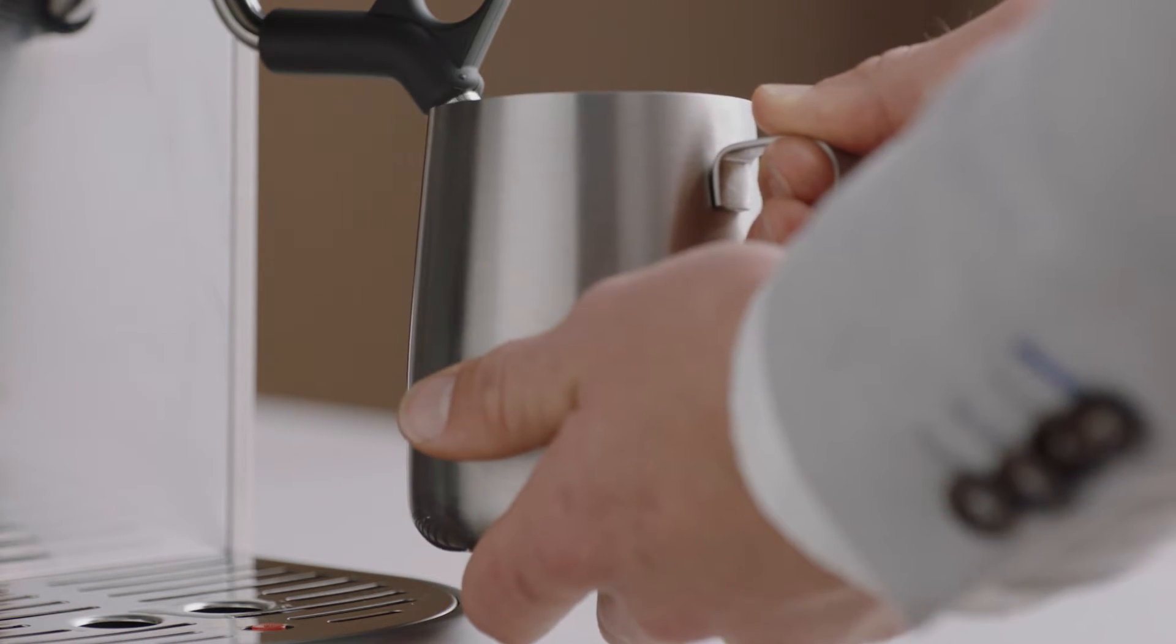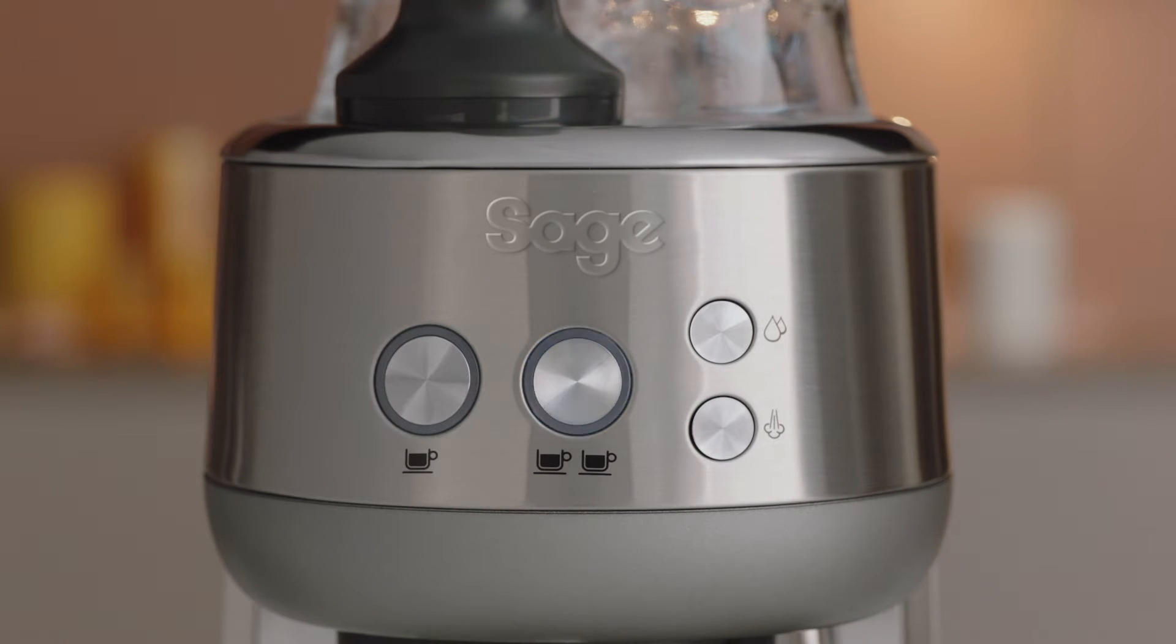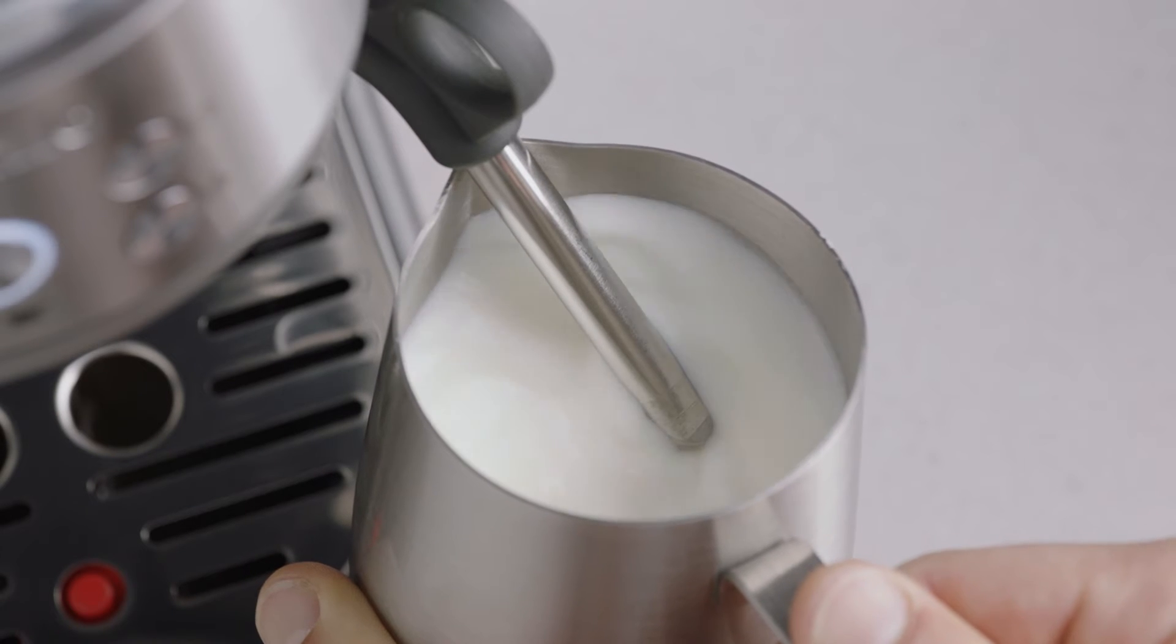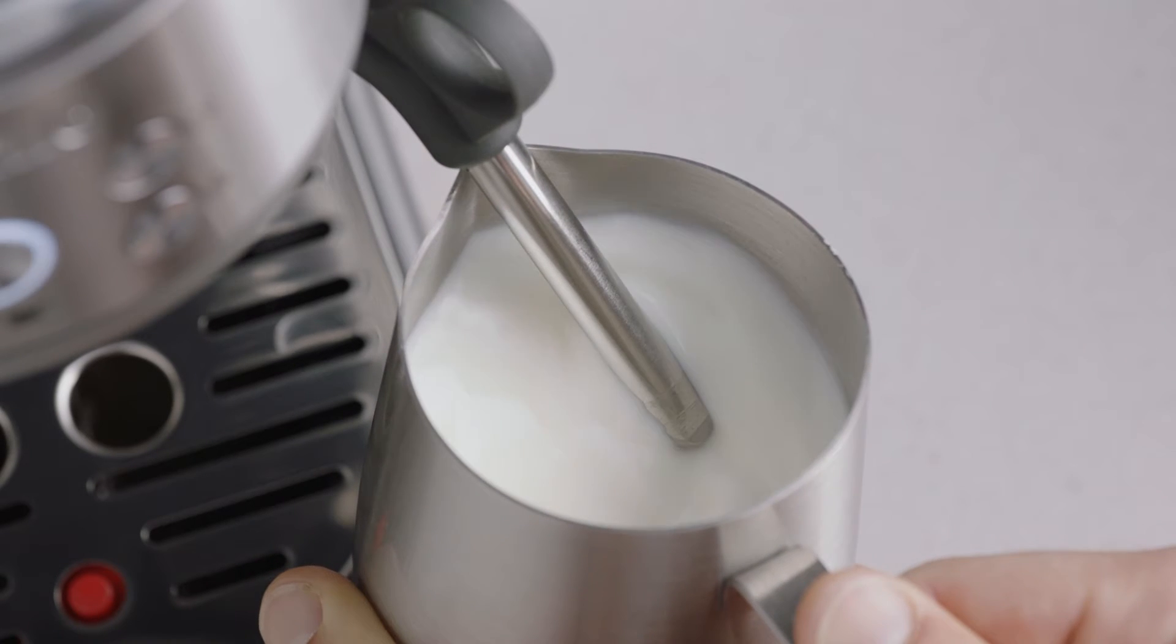Keep the tip of the steam wand just under the surface of the milk until the milk is spinning clockwise, producing a whirlpool effect. With the milk spinning, slowly lower the jug to keep the steam tip just underneath the surface of the milk.